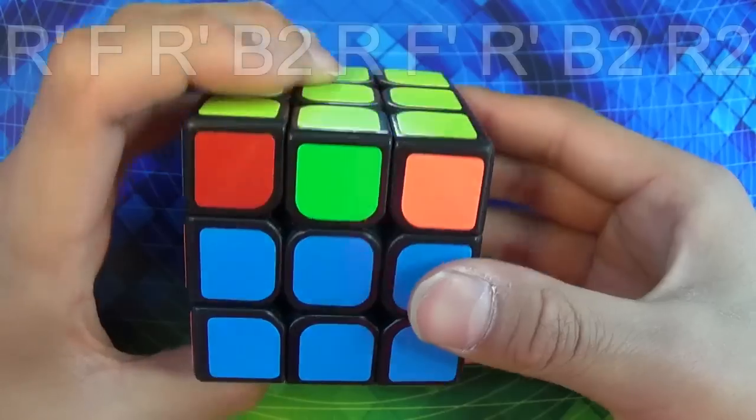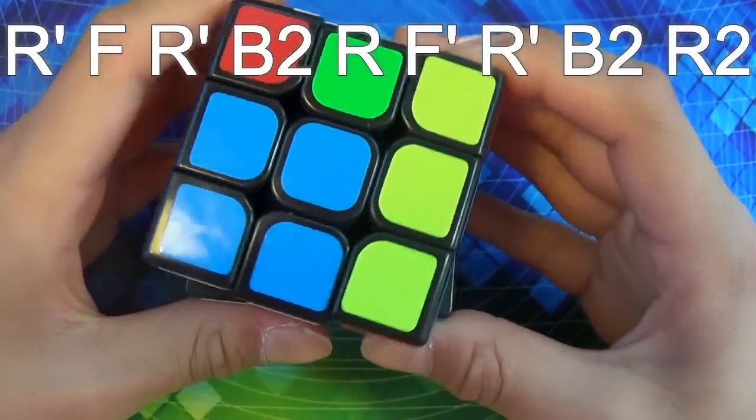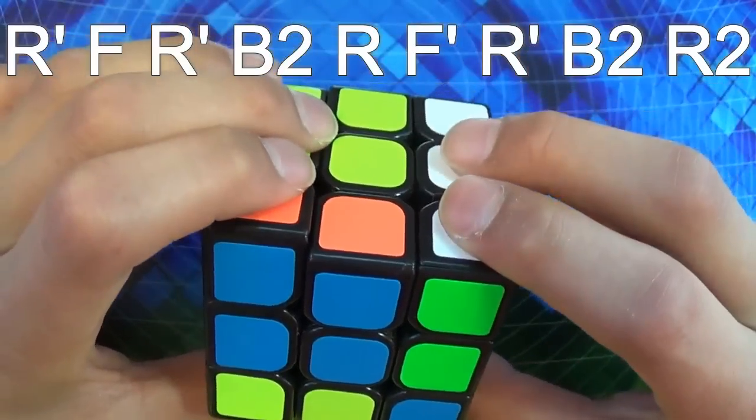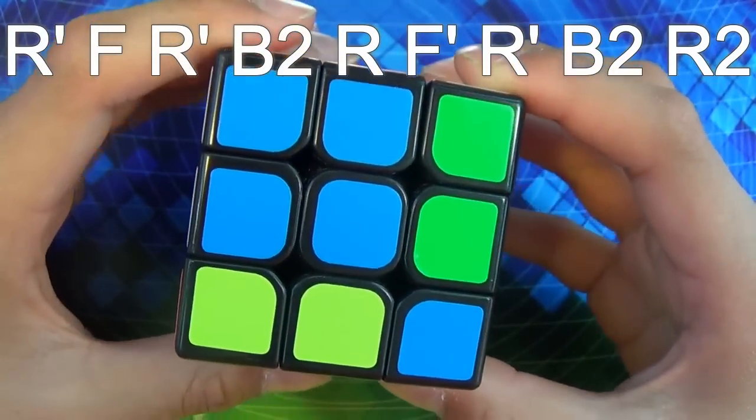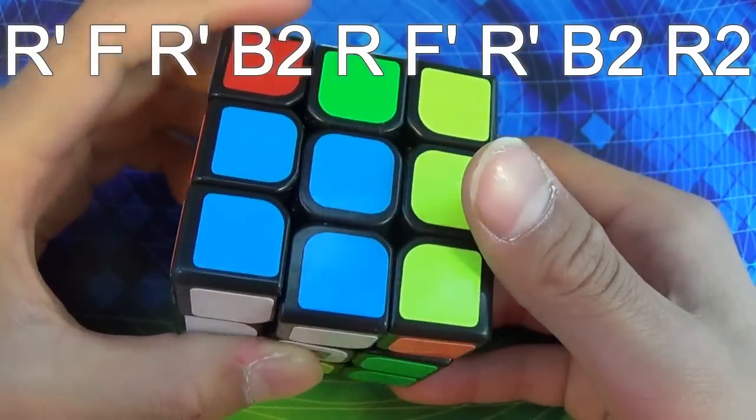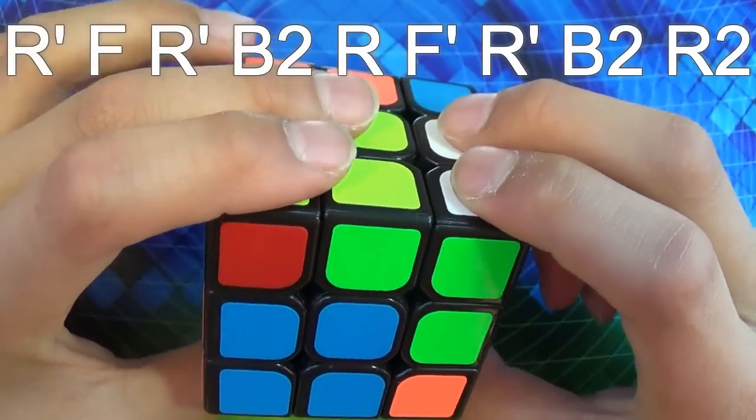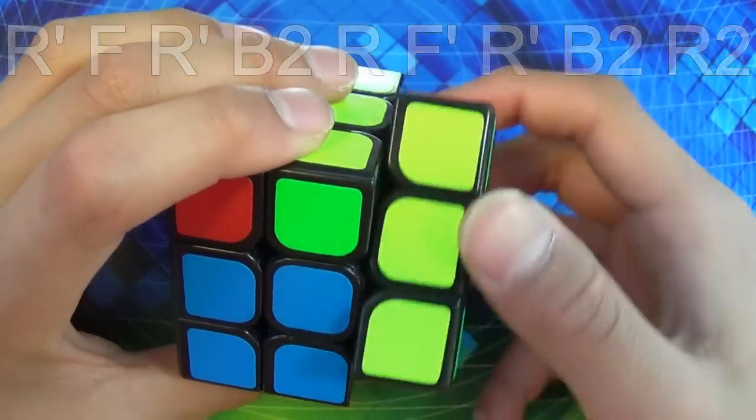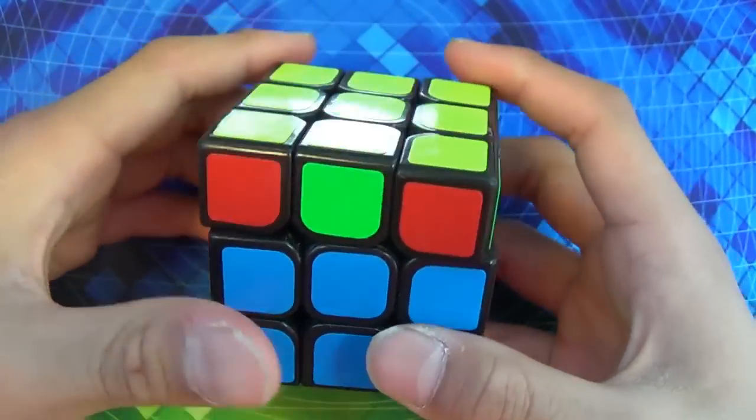And do this algorithm. So R inverted, F, R inverted, B2, R, F inverted, R inverted, B2, and R2. That is a really long algorithm, but you'll probably get used to it.